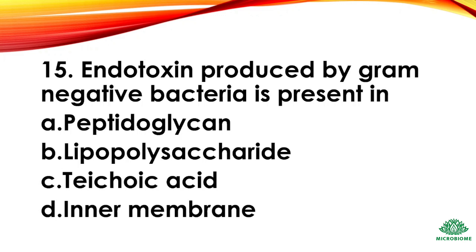Question 15: The endotoxin produced by gram-negative bacteria is present in — options: peptidoglycan, lipopolysaccharide, teichoic acid, inner membrane. The right answer: option B, lipopolysaccharide.